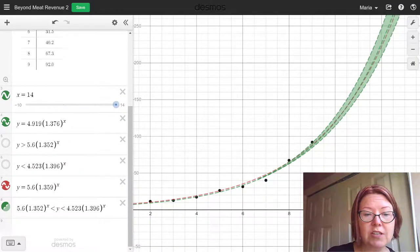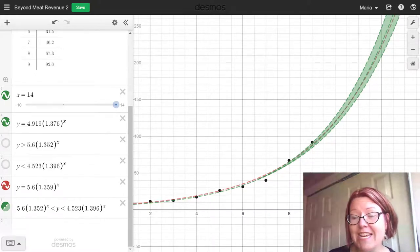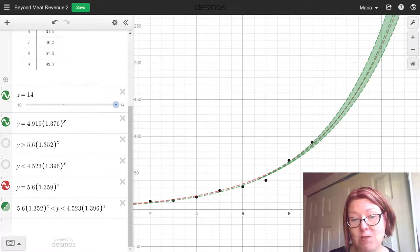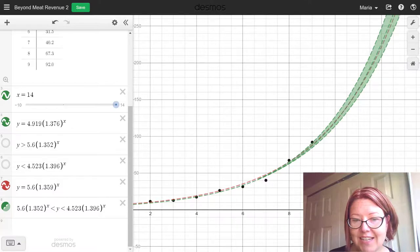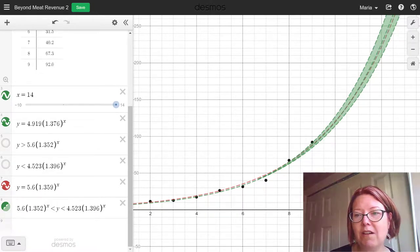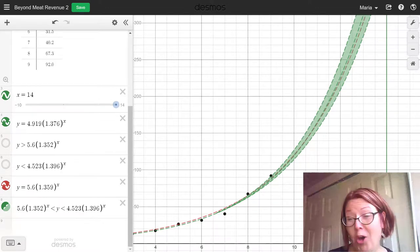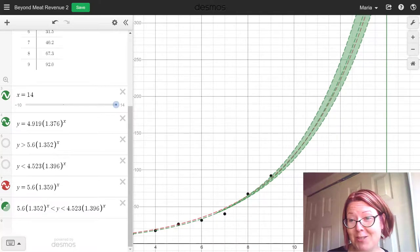Here in Desmos I've actually graphed the different models and used an inequality to shade in the space between the uppermost graph and the lowermost graph. So that would be the space between 5.6 left paren 1.352 right paren to the x. So this is what we call a zone of probability, a cone of probability. We think the revenue will be somewhere inside of this cone for the time after the data is known.